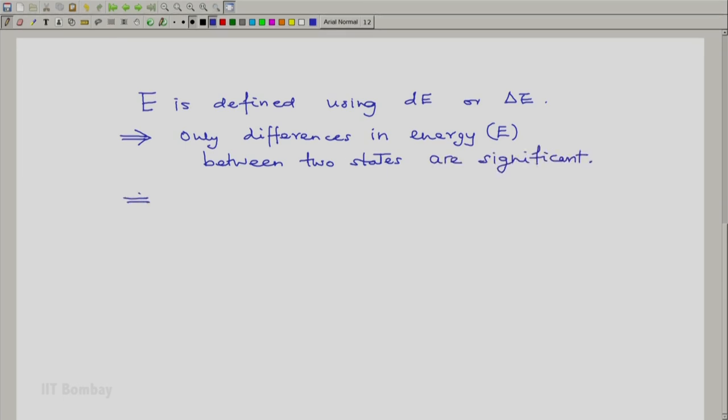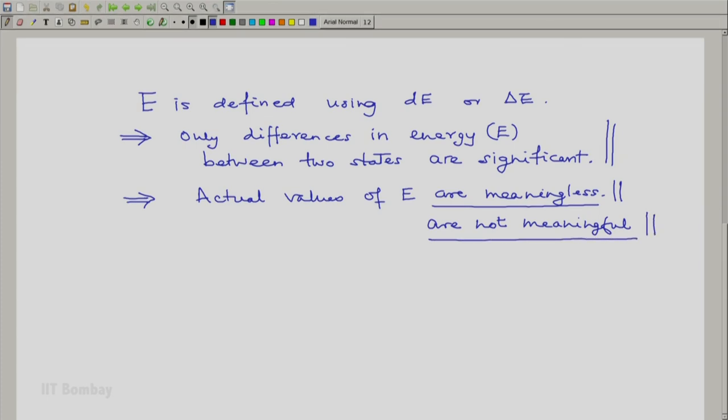And this automatically implies that actual values are not meaningful. Because we will never really use absolute values. We will always be using differences in energy or differentials of energy.